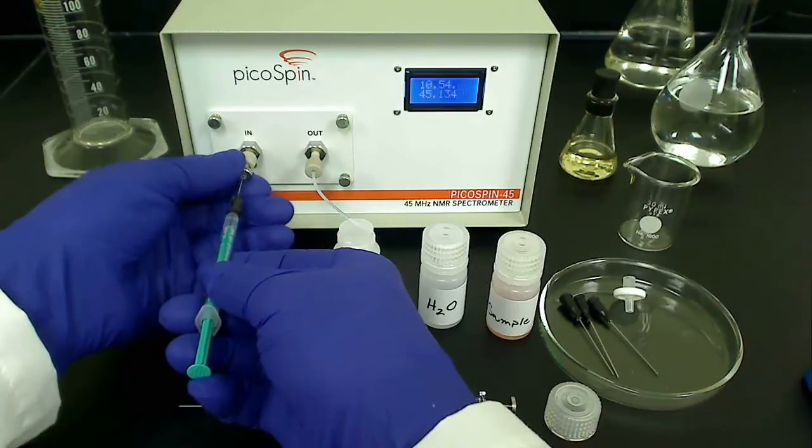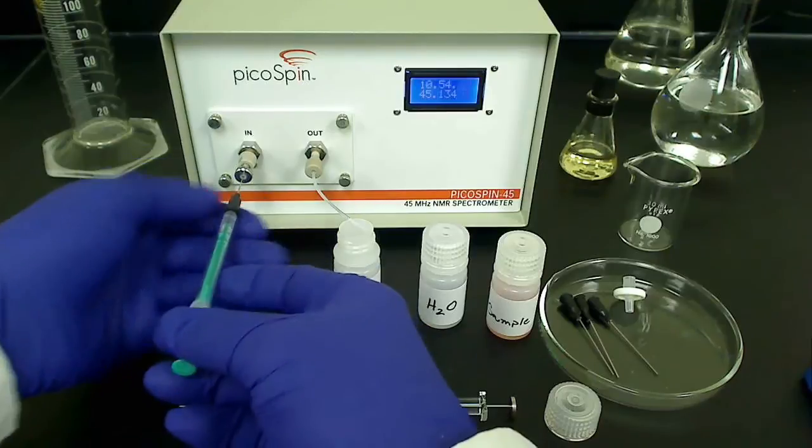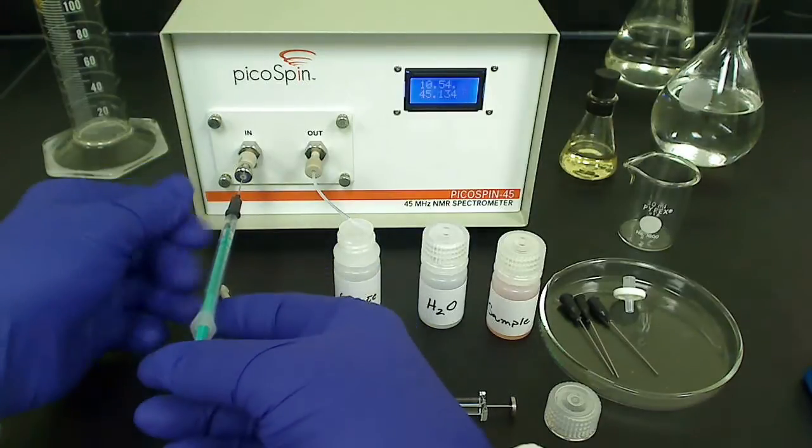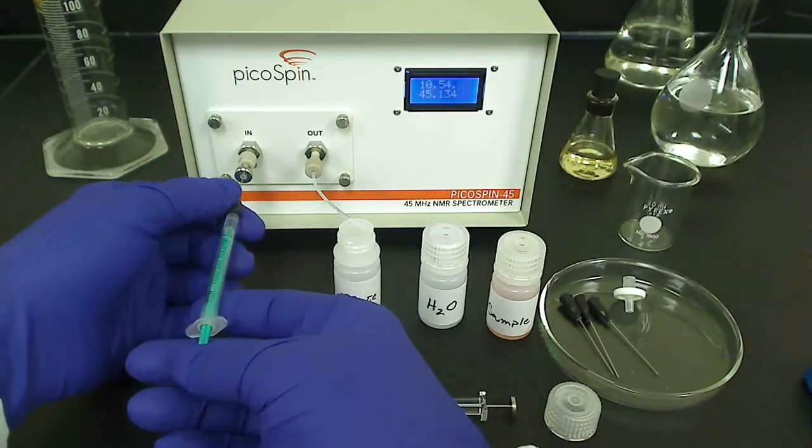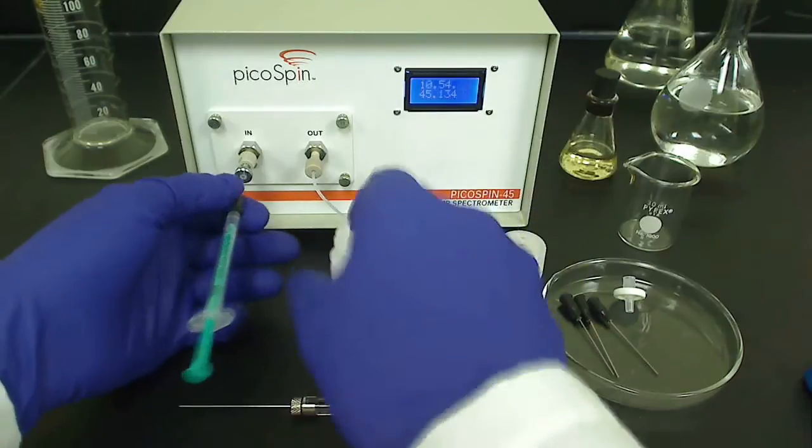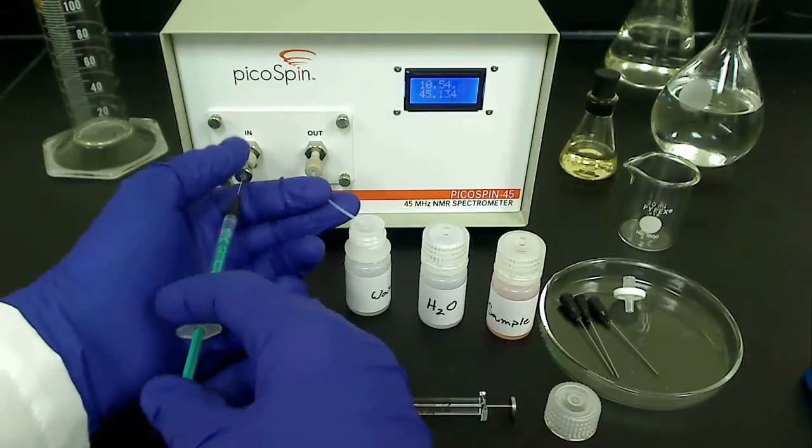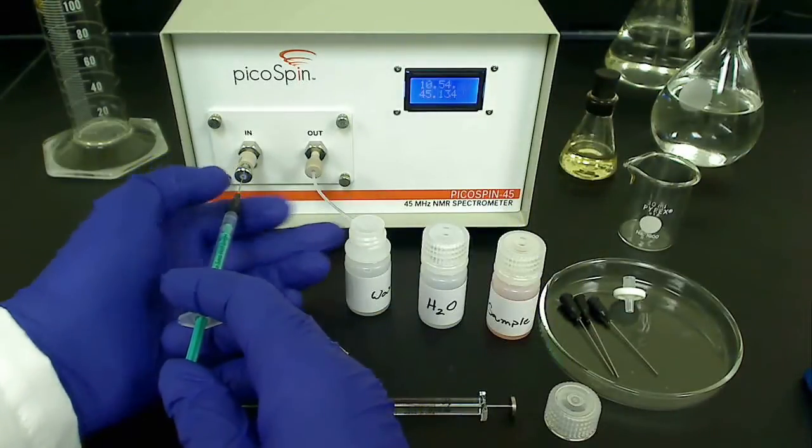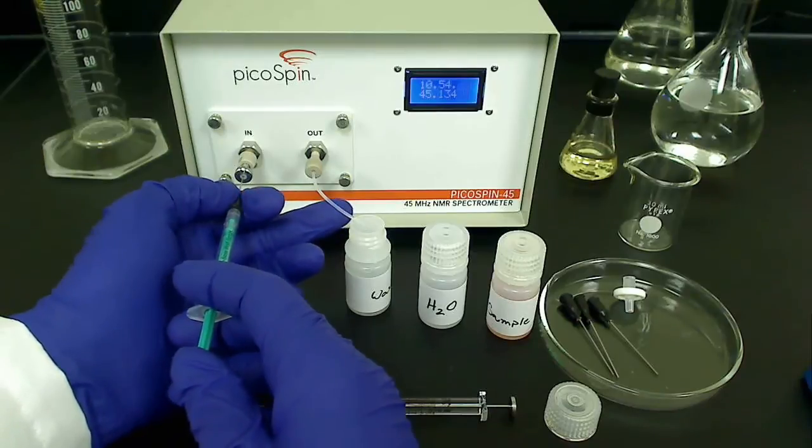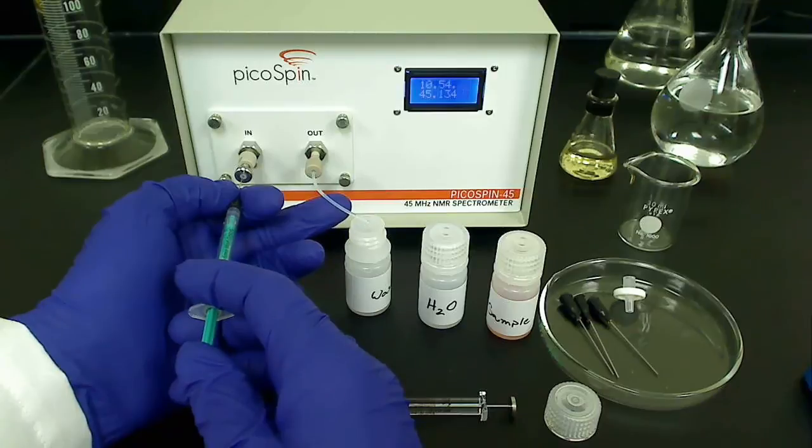Now we attach the syringe to the inlet fitting of the capillary cartridge by inserting the needle into the inline filter until we reach a hard stop. Or, if you're not using an inline filter, insert the needle directly into the inlet fitting until you reach a hard stop, and then tighten the syringe port firmly so that the needle doesn't slip out of the syringe port. This will prevent leakage as you inject your sample.